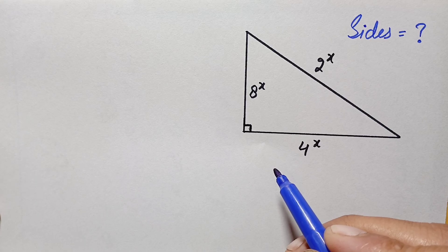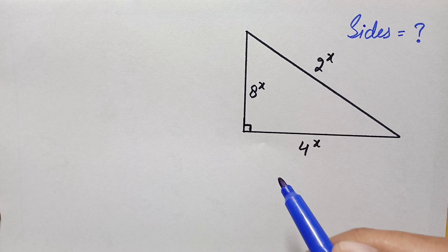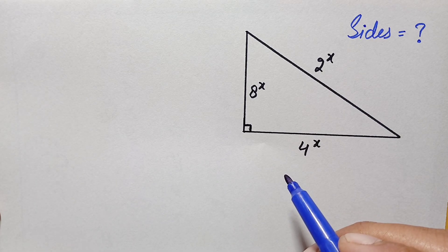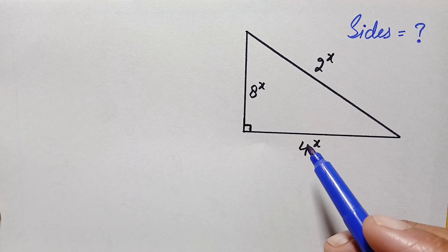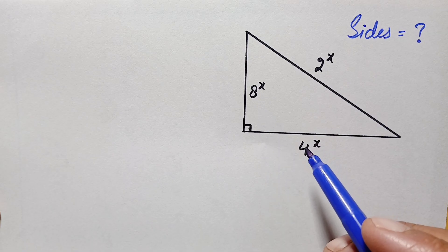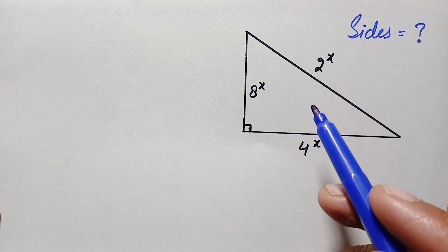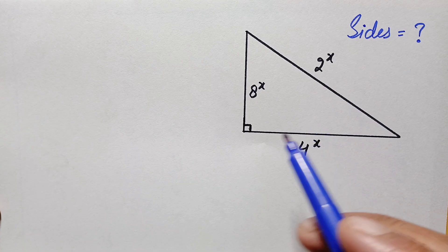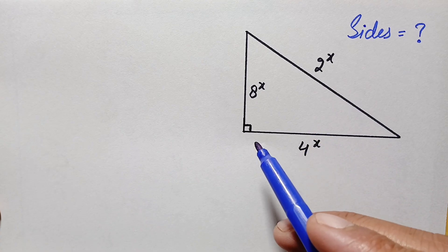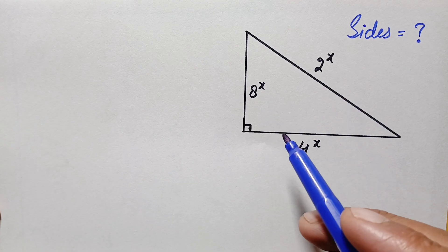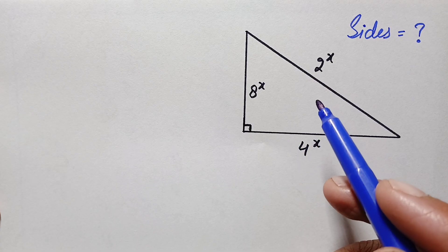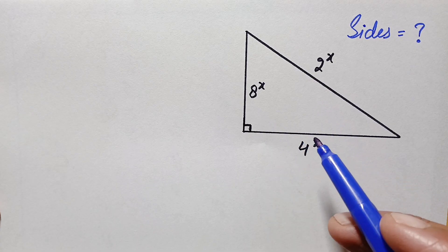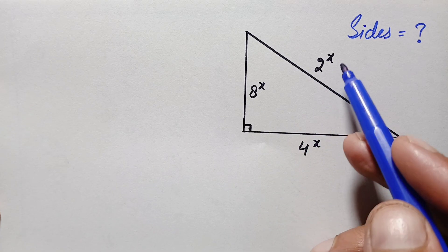Hello everyone, welcome. Today we have a very interesting geometry math problem. We are given a right angle triangle whose three sides are given in exponential numbers. Our target is to find out the length of these three sides in terms of real numbers. So let's start our solution.